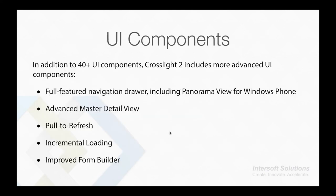The first version of Crosslight shipped with more than 40 gorgeous UI components built natively for each platform. Crosslight 2 includes even more advanced UI components suited for most business apps, such as a full-featured navigation drawer, including the panorama view loop in Windows Phone, advanced master detail view, pull-to-refresh view, incremental loading, and improved form builder support.